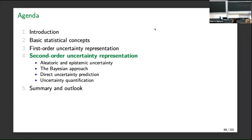Let's continue with the epistemic part, with the second level. There is a sub-structure here: I will first briefly introduce again the key distinction between aleatoric and epistemic uncertainty, then give an overview of the two main approaches to tackling how to represent epistemic uncertainty in a machine learning setting, and finally make a few remarks on the quantification problem.